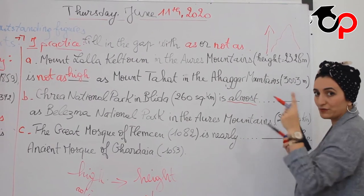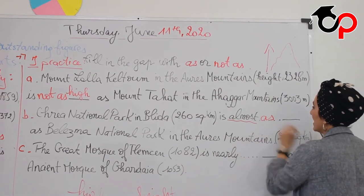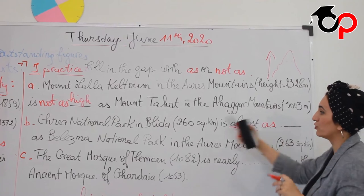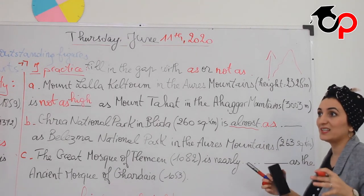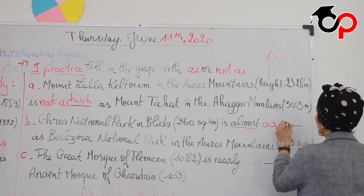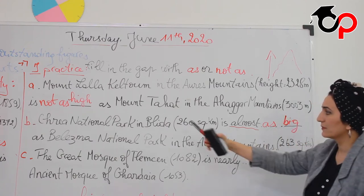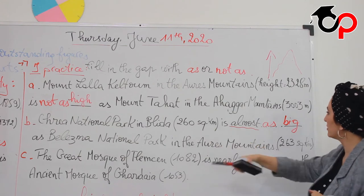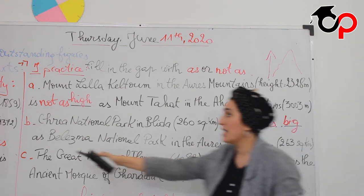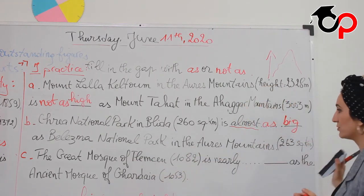We have to pay attention to these details. Here the answer is 'as.' When we talk about surface, this place is very big or very wide, so we use the adjective 'big.' Chréa National Park is almost as big as Béni Smir National Park.